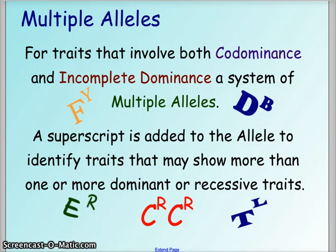We call this a multiple allele situation because we'll still use a capital letter for the dominant trait, but we're going to add a superscript which tells us that there are multiple dominant or recessive traits involved. You'll see the capital letter showing it's a dominant trait and then a superscript to distinguish each dominant trait that is present.